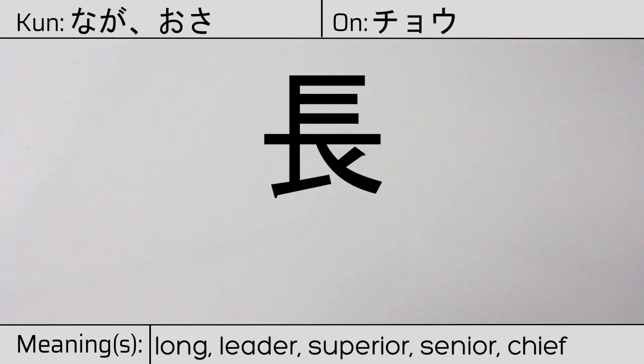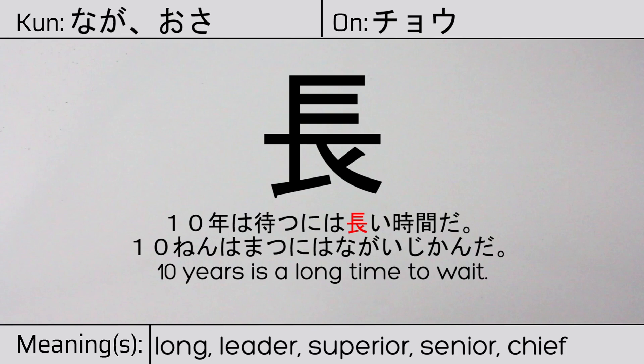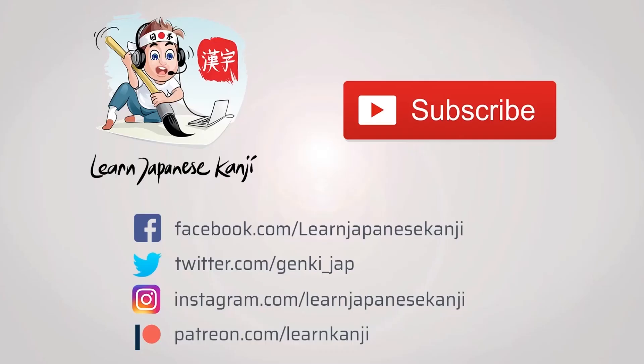Our example sentence is: 十年は松には長い時間だ — Ten years is a long time to wait. We hope you have enjoyed this quick kanji lesson. Maybe you'll enjoy some of our others. Don't forget to visit our Patreon page at patreon.com/learnkanji.